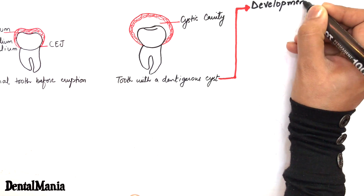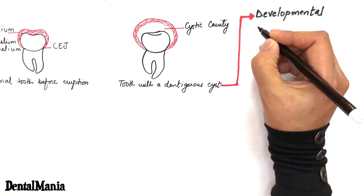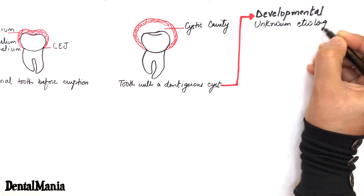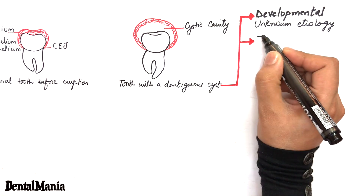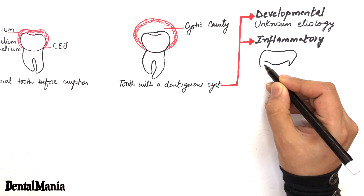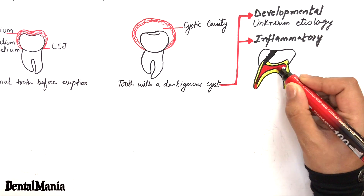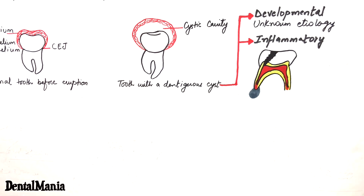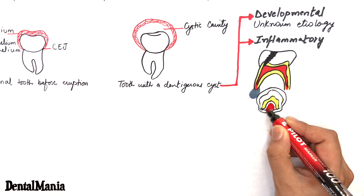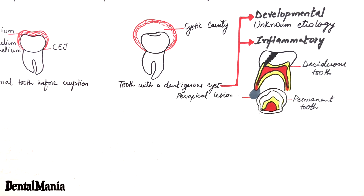Dentigerous cyst formation is either developmental with unknown etiology, or it may have an inflammatory pathogenesis resulting from periapical inflammation from an overlying primary tooth.